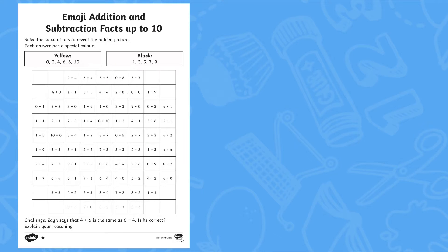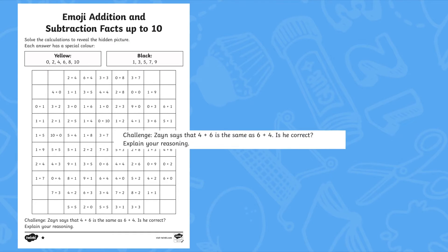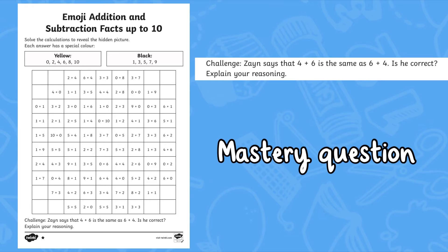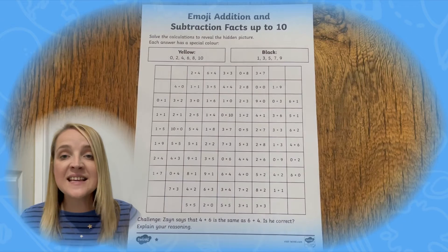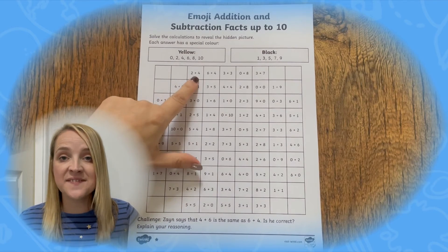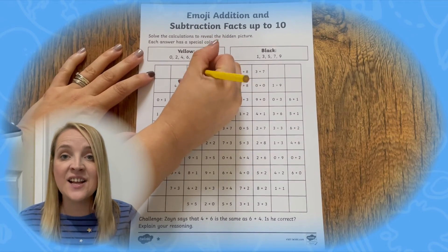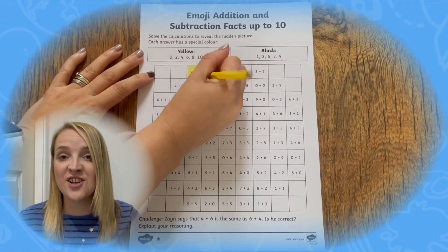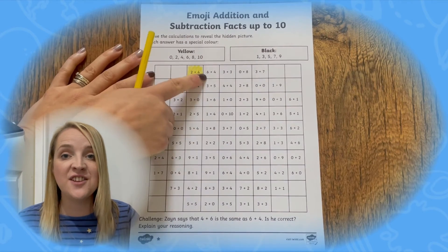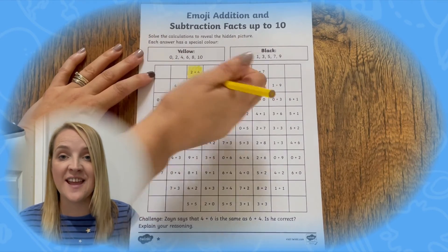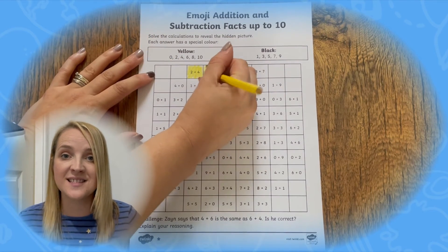You will also find a mastery question included on each activity sheet to deepen understanding and promote reasoning skills. To complete this activity, children simply need to answer the questions on the sheet and use the correct colour to colour in that box.